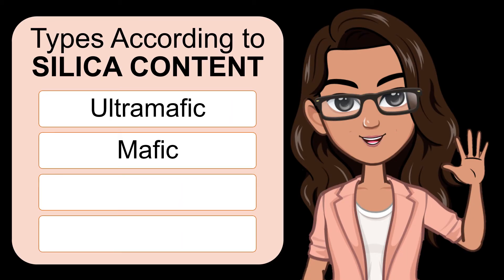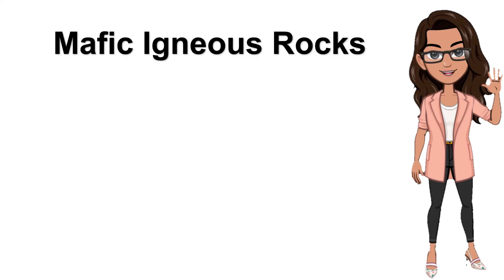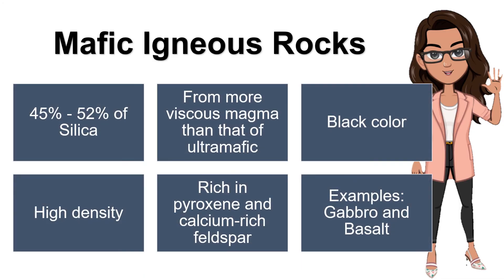Next is mafic. Mafic Igneous Rocks have a low silica content of about 45% to 52% silica. Before forming into Igneous Rocks, its magma has low viscosity, but more viscous than ultramafic magma. They have a black color and high density. They are composed of pyroxene and calcium-rich plagioclase feldspar. Examples of these rocks are gabbro and basalt.